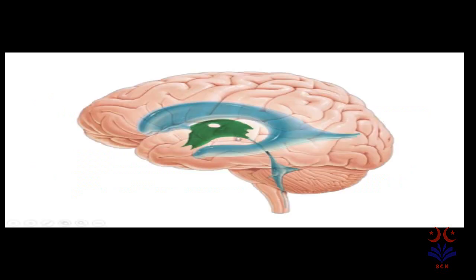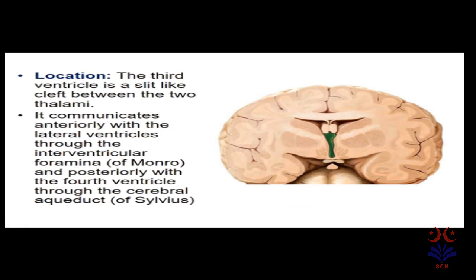Now we come to the third ventricle. In this picture the green area indicates the third ventricle, which has connections with other ventricles — both lateral ventricles anteriorly and the fourth ventricle posteriorly. The third ventricle is slit-like, located between the two thalami, present in the diencephalon. It communicates anteriorly with the lateral ventricles through the interventricular foramen of Monroe and posteriorly with the fourth ventricle through the cerebral aqueduct of Sylvius.